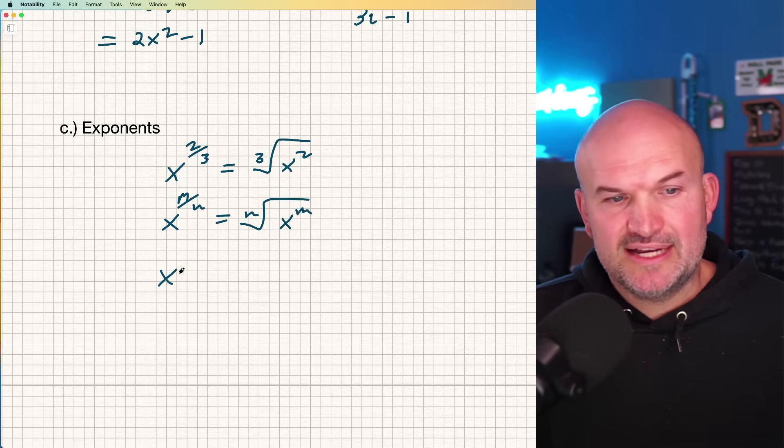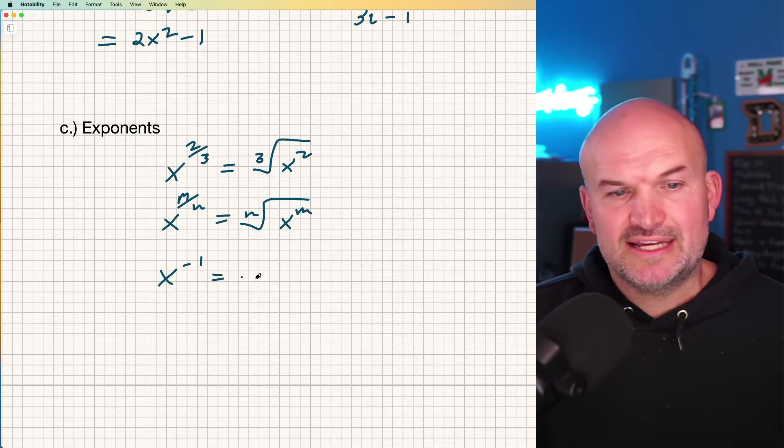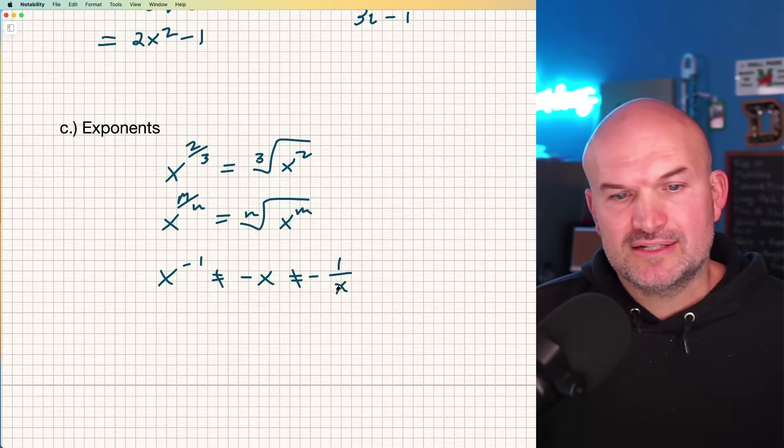The other thing students make mistakes on is negative exponents. They sometimes want to treat that as negative x, no, or they want to treat that as negative one over x, uh-uh.